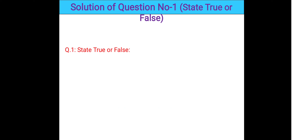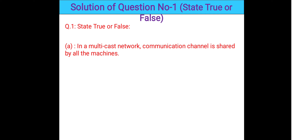Now see the first solution of question number one — State True or False. Question 1a: In a multicast network, the communication channel is shared by all machines. This statement is true — in a multicast network, the communication channel is shared by all the machines.